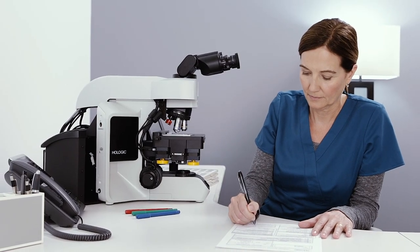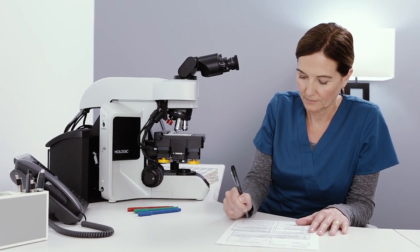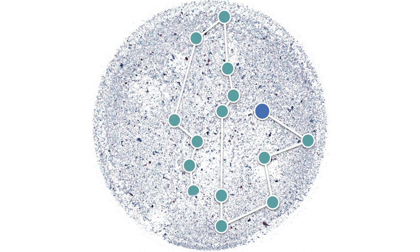During the imaging and analysis of the slide, the ThinPrep Integrated Imager stores the coordinates of the fields of views containing 22 objects of interest. Once the imaging of the slide is complete, the location of the 22 fields are displayed on a map of the slide.